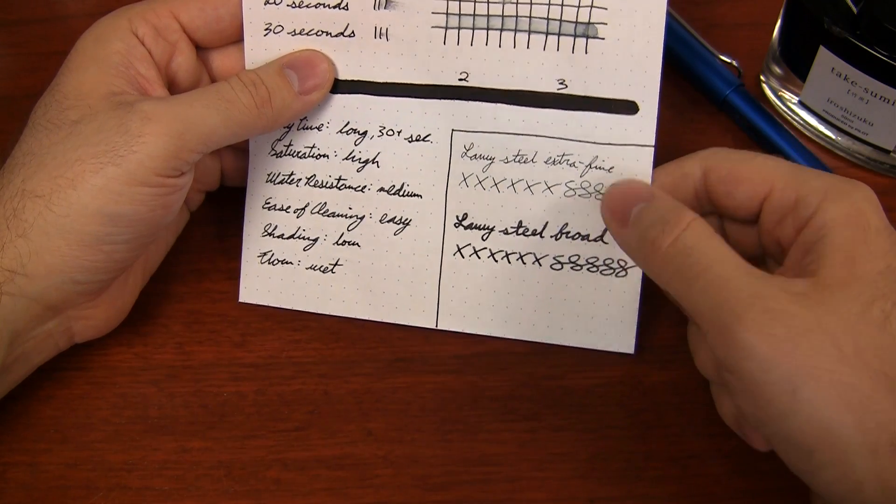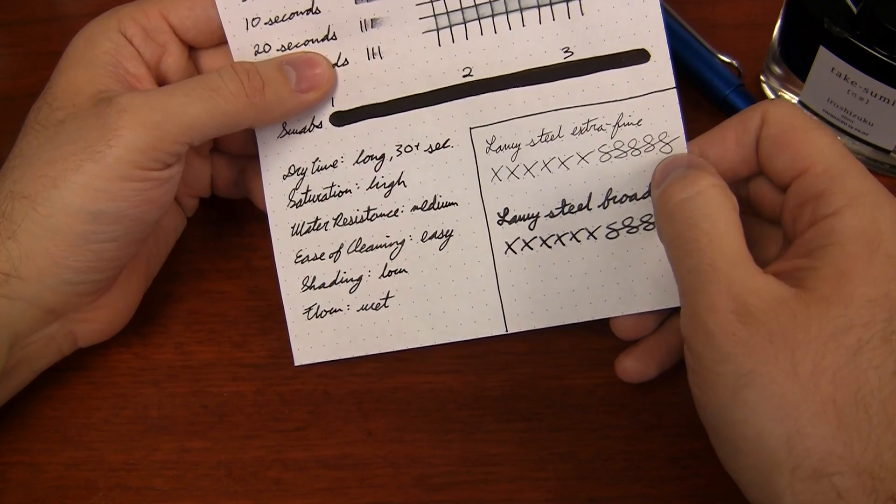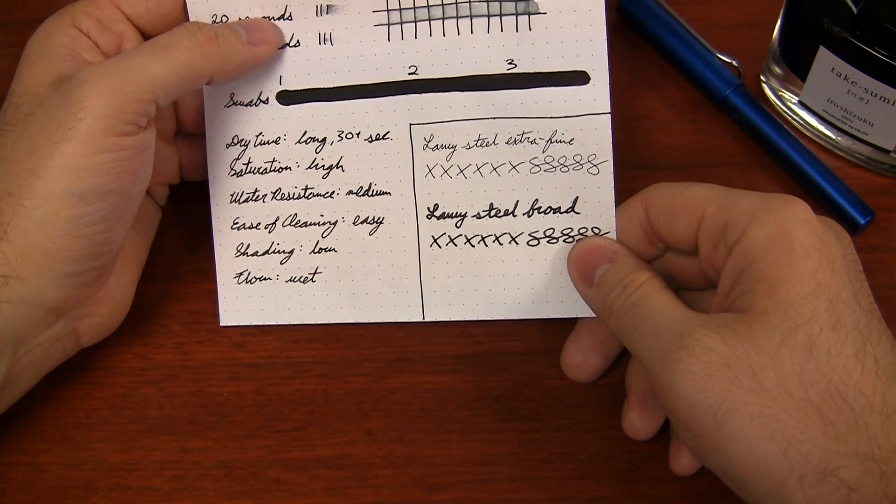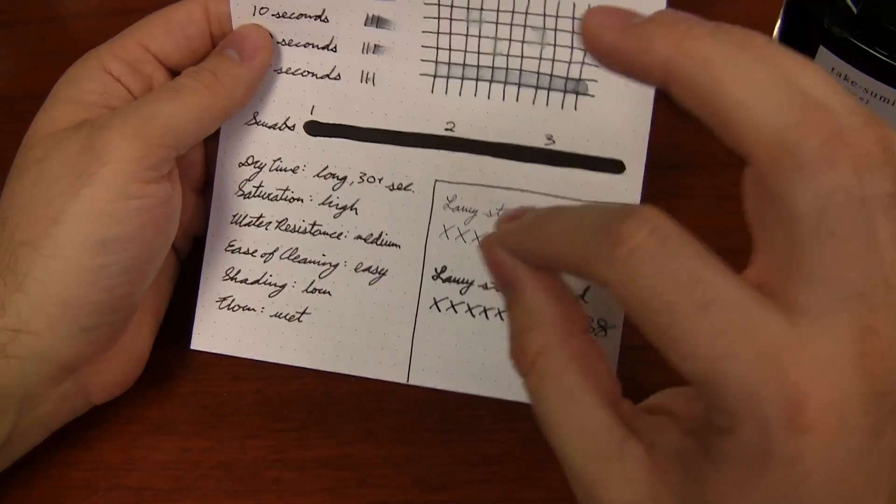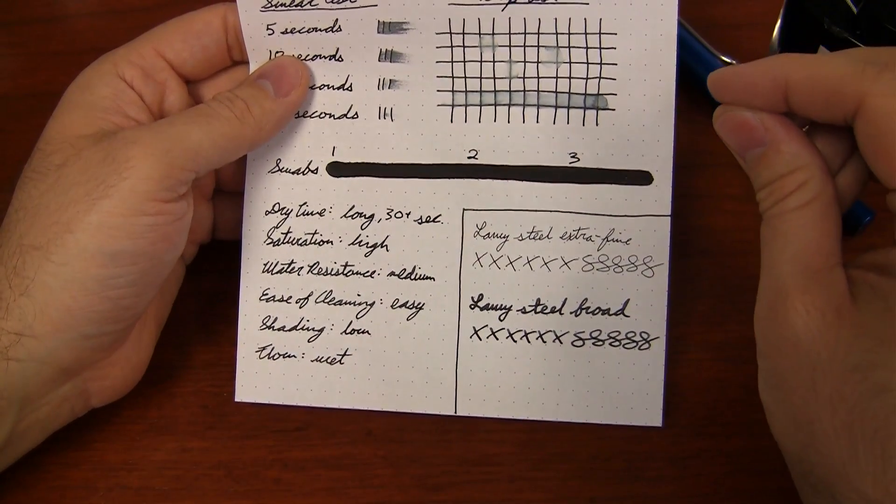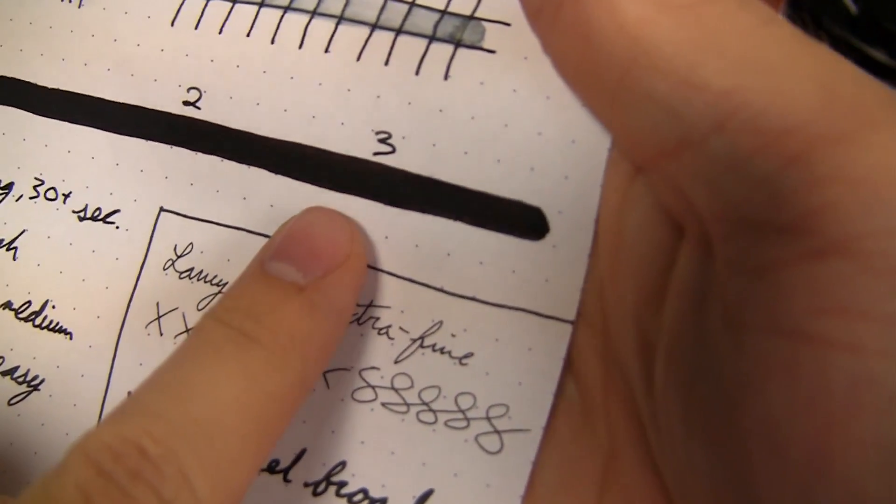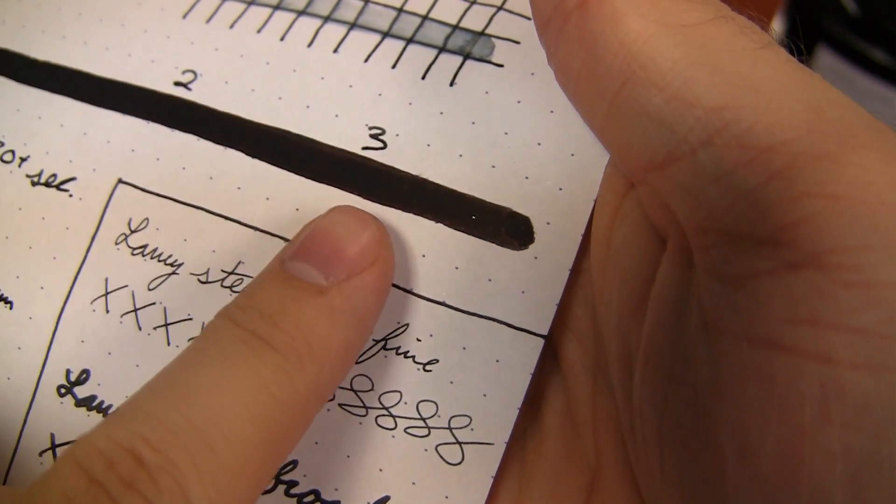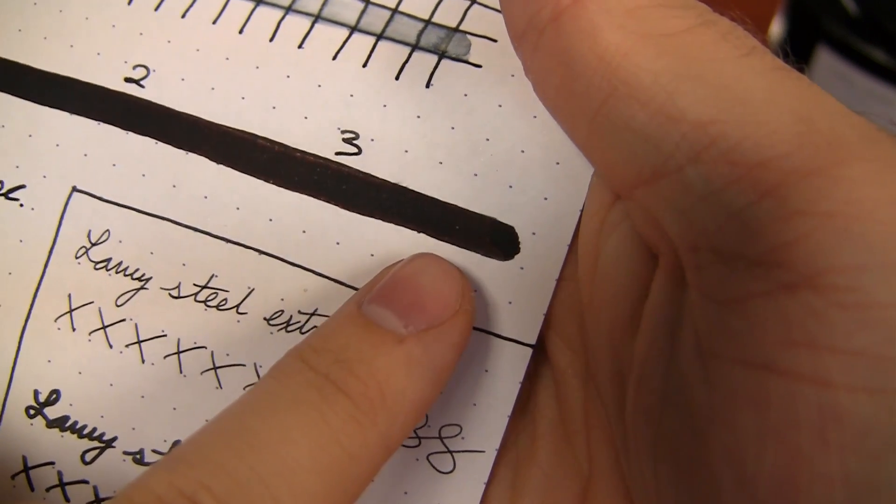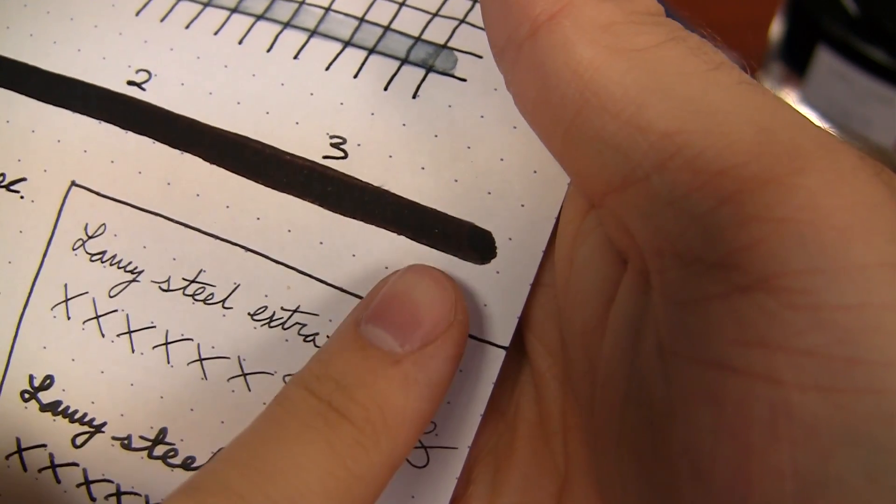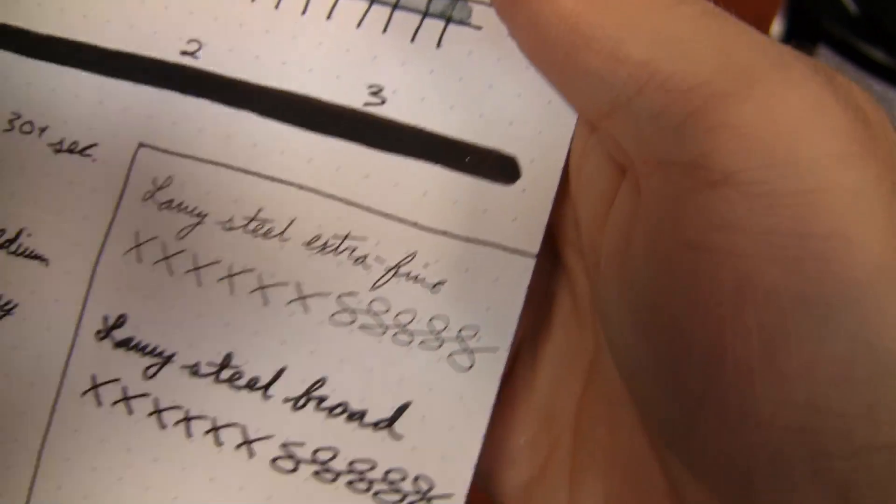I use it in a Lamy steel extra fine, as well as a broad. It definitely looks a little bit lighter when you use it in an extra fine. It looks darker in the broad, as you can very plainly see here. One thing that is kind of worth pointing out, in the swab, you're not able to see much of anything except black. But when I got into like the second and third level swabs here, I was able to see just a little bit of a reddish sheen. I really don't think it's anything that you're going to see in your normal writing, unless you're just writing with an absolute gusher of a pen or maybe a dip pen or something. But it's just little fringes there. So I thought it was something worth pointing out.